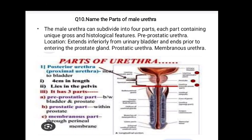Question number ten: name the parts of the male urethra. The male urethra can be subdivided into four parts, each containing unique gross and histological features: the pre-prostatic urethra, whose location extends inferiorly from the urinary bladder and ends prior to entering the prostate gland.